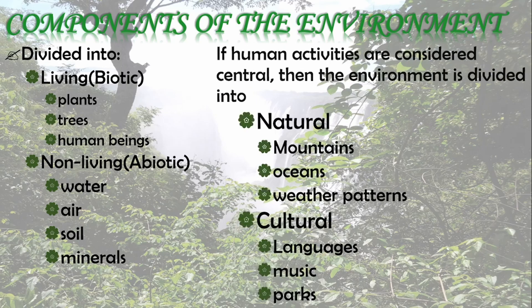When looking at the environment from the human activities perspective, we consider it divided into natural and cultural. The natural environment is one that has not been tampered with or invented by human beings — it includes mountains, oceans, and weather patterns, which we have no control over. The cultural component is something that humans have tampered with or can manipulate, and includes things like languages, music, and parks. All these components use different terms but are talking about the same thing.